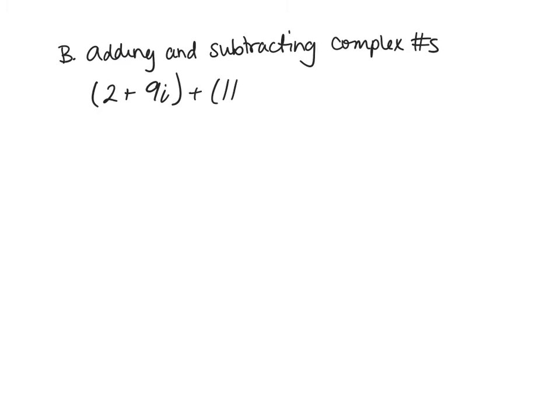The next thing we're going to look at is adding and subtracting complex numbers. It's just like adding up like terms. We'll add the imaginary parts together. So we have 2 plus 9i plus 11 minus i. My real parts are the 2 and the 11, so 2 plus 11 gives me 13.